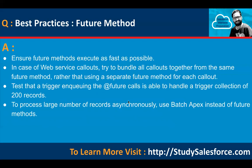Best practices while using future methods: ensure future methods execute as fast as possible. In case of web service callouts, try to bundle all callouts together from the same future method rather than using a separate future method for each callout. Test that a trigger invoking @future calls can handle a collection of 200 records. To process a large number of records asynchronously, use Batch Apex instead of future methods.